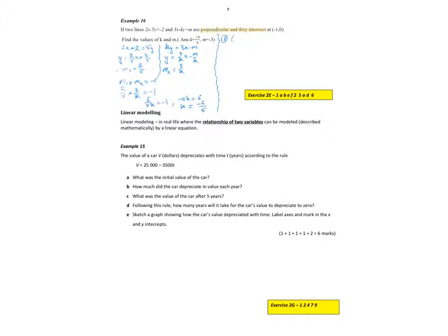For the second part, we know that they intersect at negative 1, 0, so the second equation needs to satisfy that point. If I substitute negative 1, 0 into that equation, I can work out my m value. So 3 times negative 1 minus k times 0 has to equal m, and so we get m equal to negative 3.